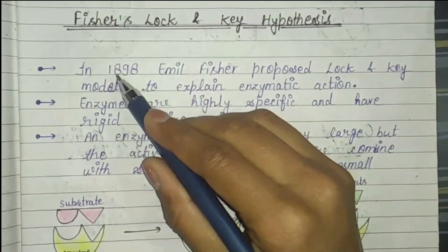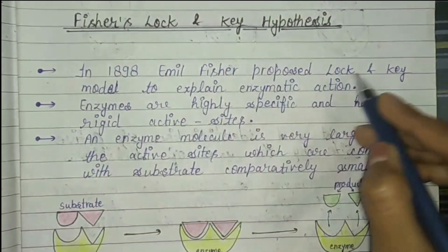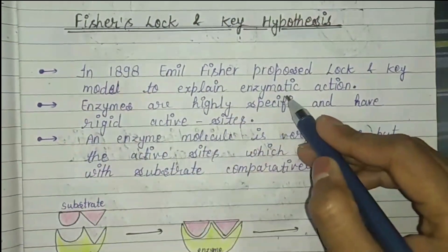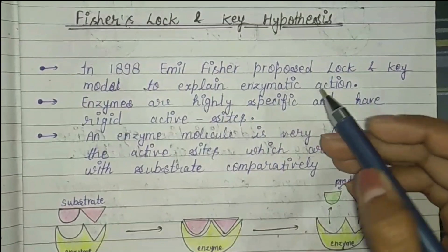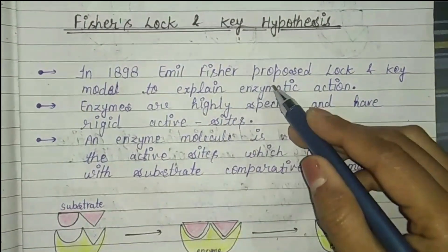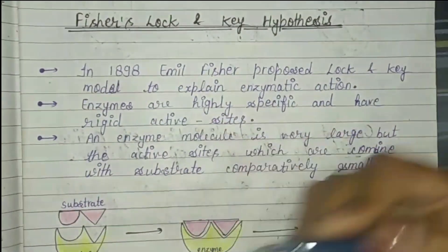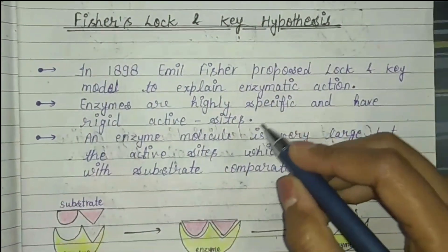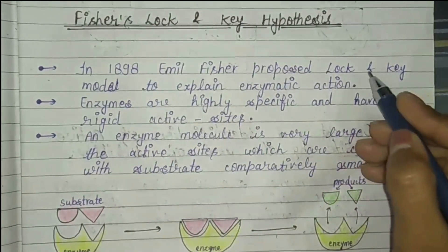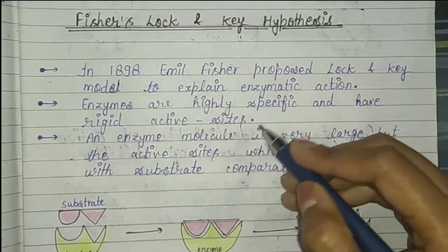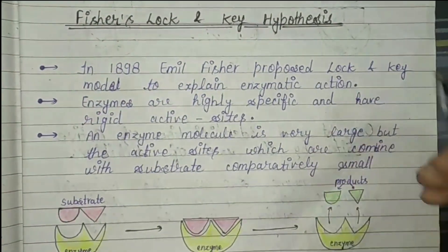In 1894, Emil Fischer proposed the lock and key model to explain enzymatic action.